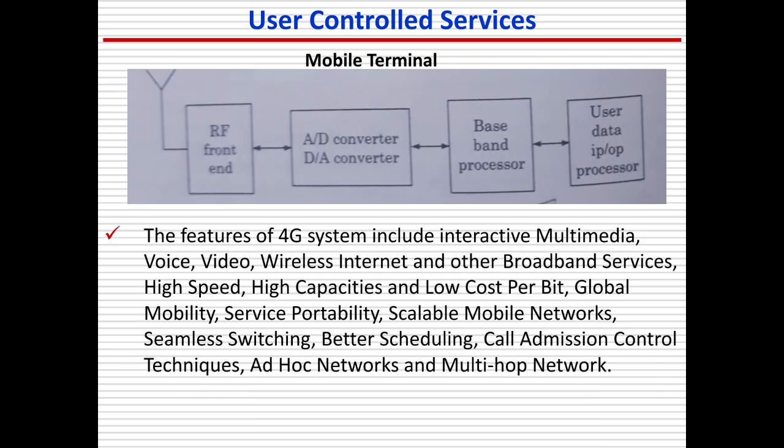The mobile terminal consists of an RF (radio frequency) front-end, an analog-to-digital converter, a digital-to-analog converter, a baseband processor, and a user data input/output processor. There is a reverse link, showing forward and reverse direction communication.